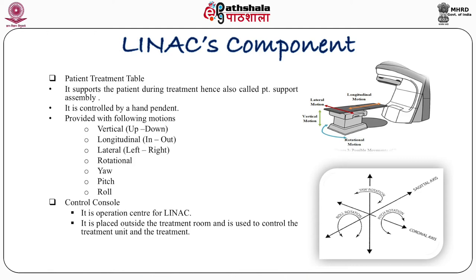The patient treatment table supports the patient during treatment and has many types of movement: vertical up and down, longitudinal in and out, lateral left and right, and rotational movement about its axis. It is controlled by a hand control pendant. The control console is the operation center for the linac, placed outside the treatment room. It is used to control the treatment unit and is considered the heart of the machine. The operation of the linac is controlled from the control room using various controls and switches on the panel.